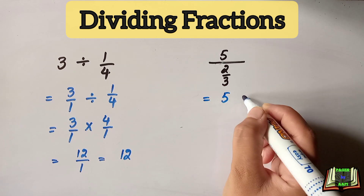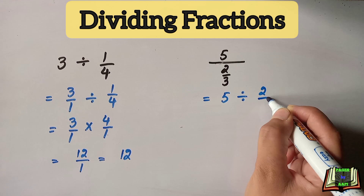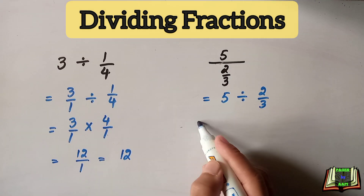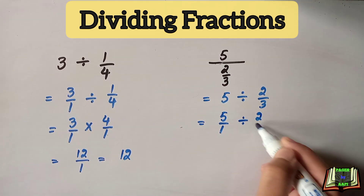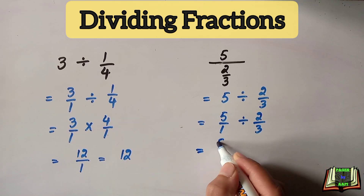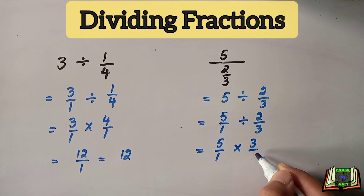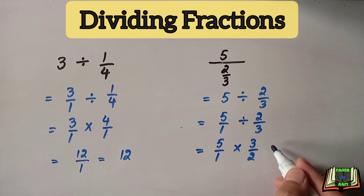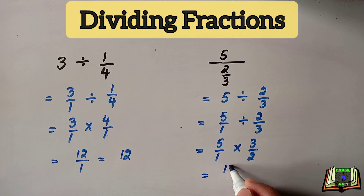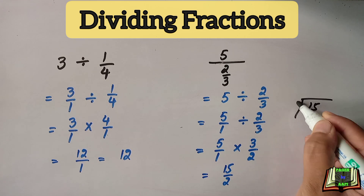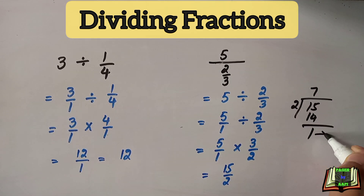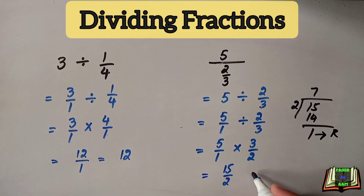We can write it as five divided by two thirds. We change the whole number into a fractional number: five can be written as five by one. Now five by one stays as it is, divide changes into multiply, and two by three changes into three by two — its reciprocal. The numerator is equal to fifteen and the denominator is equal to two. Since the answer is an improper fraction, we change it into a mixed fraction: fifteen divided by two gives us seven and one half. That is the answer.